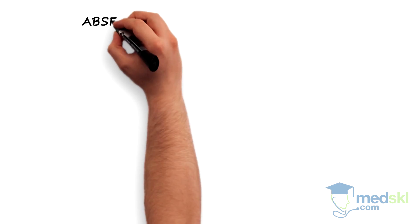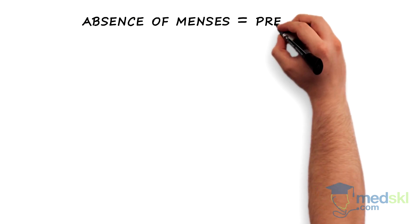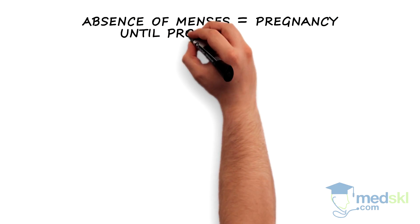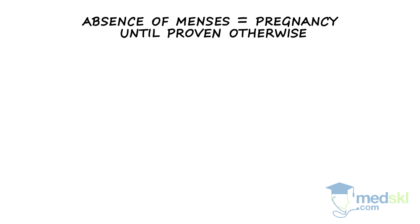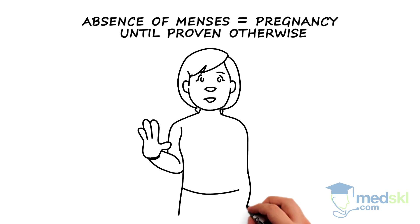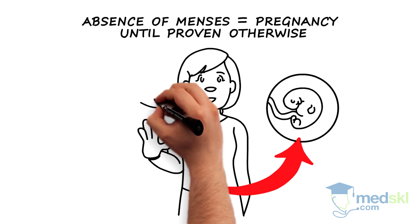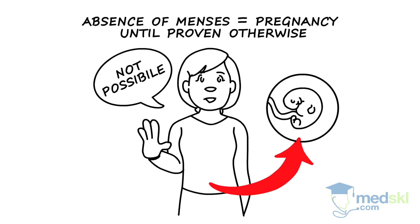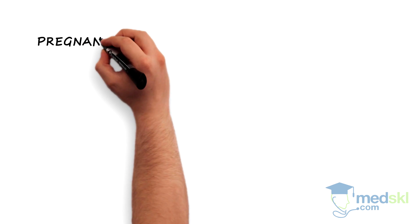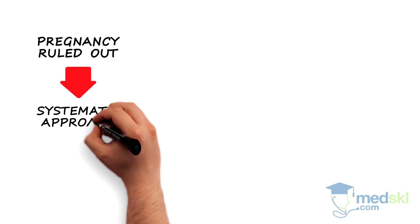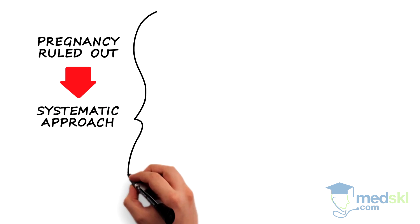Most importantly, the absence of menses is caused by pregnancy until proven otherwise. This holds true even for those who assure you that pregnancy is not a possibility. Once pregnancy has been ruled out, a systematic approach can be taken.